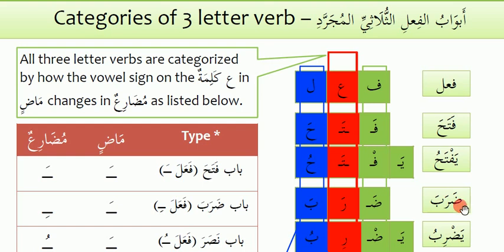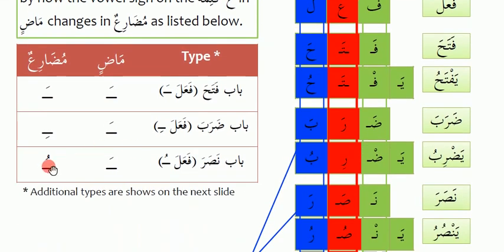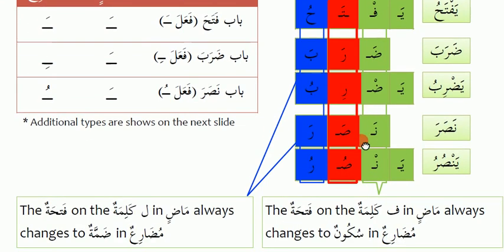For example, Zaraba — it will become Yazribu. To make the future tense, you write a Seen before it. Nasara becomes Sayansuru — meaning 'he will help.' So with the Seen prefix, it becomes future tense.